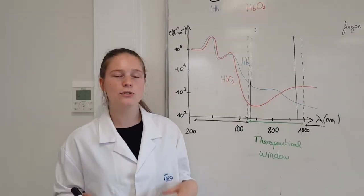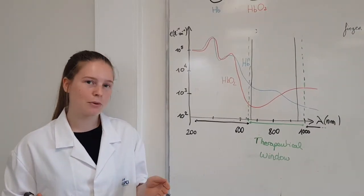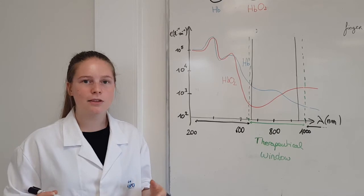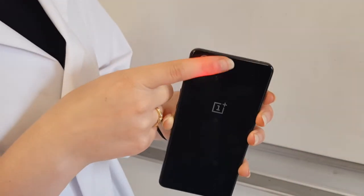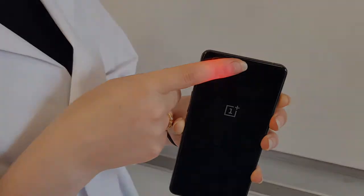An experiment to show that only red and infrared light is transmitted through a finger is to put your finger on a white bright light, and you can see that your finger turns red.